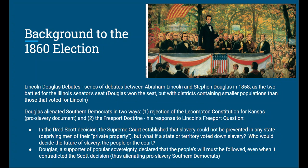The second thing was during the debates themselves, Douglas issued what is commonly called the Freeport Doctrine — his response to Lincoln's Freeport question asked in Freeport, Illinois. Lincoln noted that in the Dred Scott decision, the Supreme Court established that slavery could not be prevented in any state, since men could not be deprived of their private property even in free states. Lincoln asked: what if a territory actually votes down slavery — who decides, the people or the Supreme Court? Douglas, a huge supporter of popular sovereignty, declared the people's will must be followed even if it contradicted the Dred Scott decision. This really alienated the pro-slavery Southern Democrats, who decided there was no way they wanted Stephen Douglas as their candidate for the presidency in 1860.